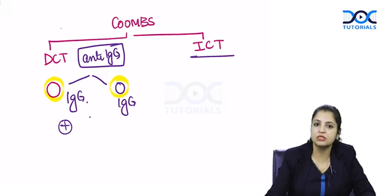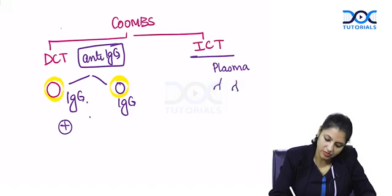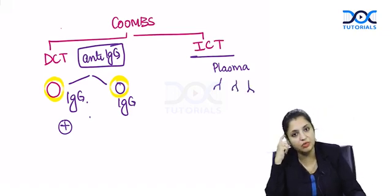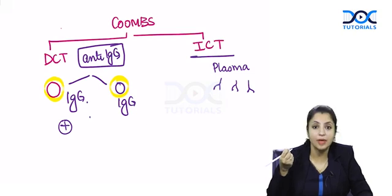Indirect Coombs test is when you want to check the plasma for presence of antibodies. You don't know whether they're present on cells or not - they're just present in the plasma. This is typically done in blood banking.